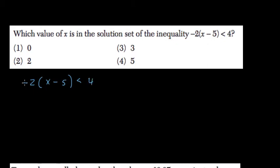So less than 4. I distribute the negative 2. So negative 2x times negative 5 is plus 10, less than 4. Subtract 10. And what do we get?